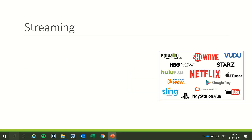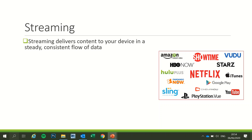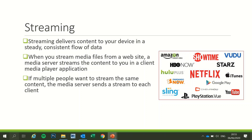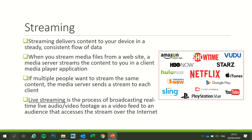Streaming is included in this lesson about digital communication because businesses and individuals can create video or audio recordings of presentations, marketing pieces, product demonstrations, and so on, and make these recordings available as streaming media. Streaming delivers content to your device in a steady, consistent flow of data. When you stream media files from a website, a media server streams the content to you in a client media player application. If multiple people want to stream the same content, the media server sends a stream to each client. Live streaming is the process of broadcasting real-time live audio and video footage as a video feed to an audience that accesses the stream over the internet.